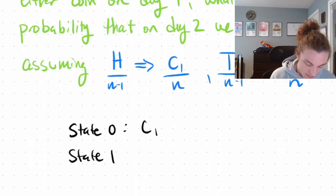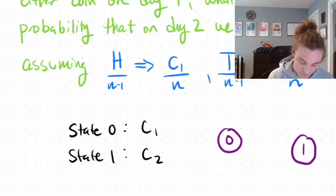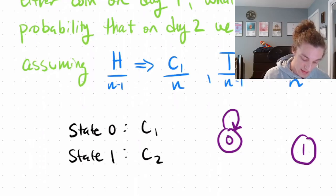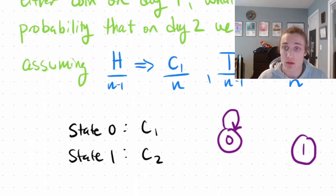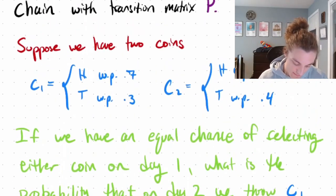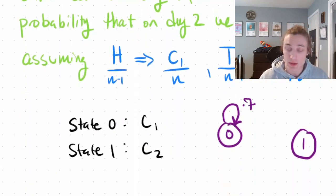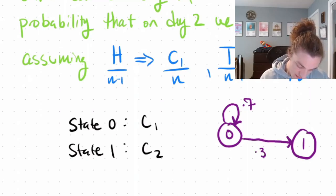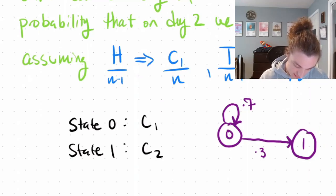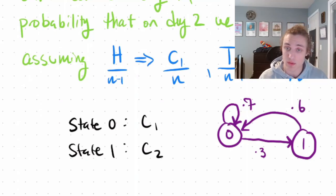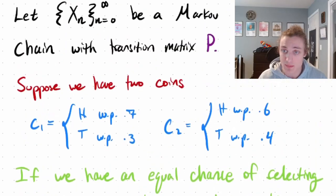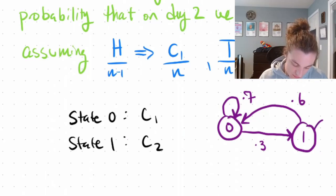This can be designed as a two-state Markov chain where state 0 is coin 1 and state 1 is coin 2. Drawing the diagram with two nodes — state 0 and state 1 — the probability of staying in state 0 is the probability of throwing heads when using coin 1, which is 0.7. Necessarily, the probability of transitioning to the other state is 0.3. The probability of going back to state 0 from state 1 is 0.6, since coin 2 has a 0.6 probability of throwing heads.